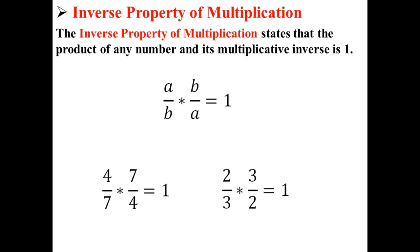Below we have two examples. So let's say we have the number 4 over 7. If we multiply it by its inverse, that is, if we multiply it by 7 over 4, we get 1.